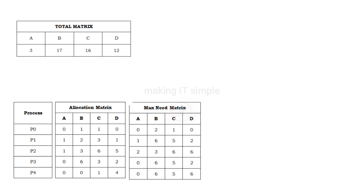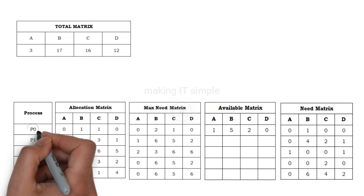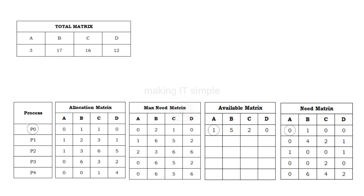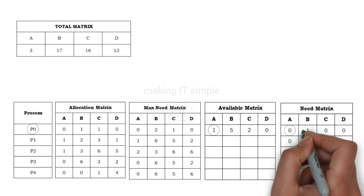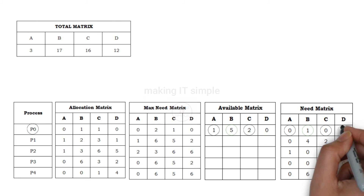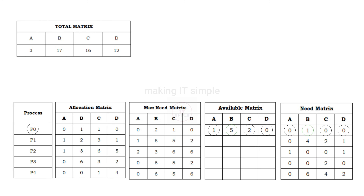Now let us check with these available instances of resources whether we can complete the request of any process and finish its execution. Let's go serially and check process P0. P0 does not require any instance of resource A and we have 1 left. It requires 1 instance of B and we have 5, so we can provide it. It does not require any instance of C or D. So with available resources, we can complete the need of process P0.